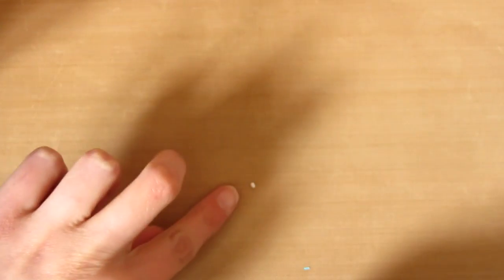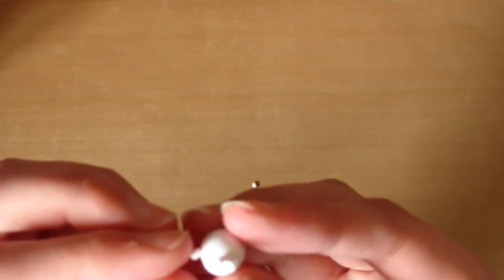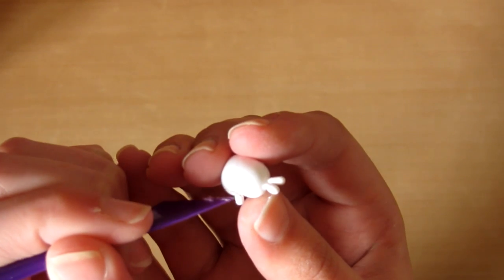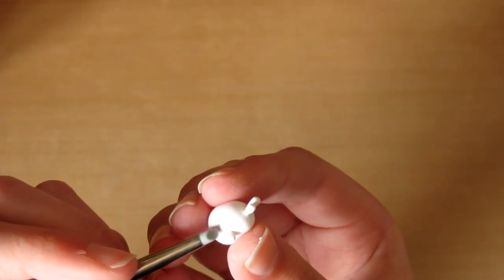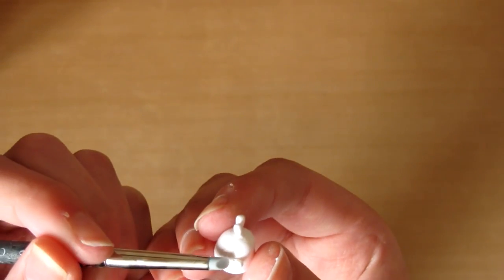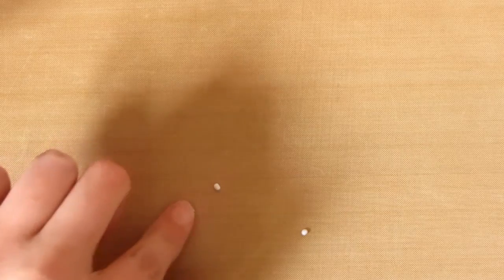Then you want to take some more white clay and roll these into logs and put these on the side of melang's body for the arms. And I'm not sure if I'm pronouncing melang right, so excuse me. Then just repeat this for the feet.